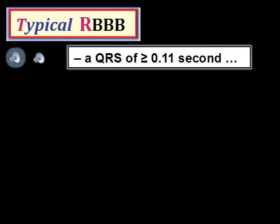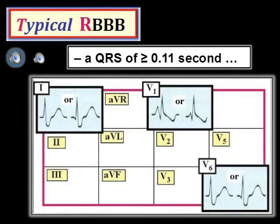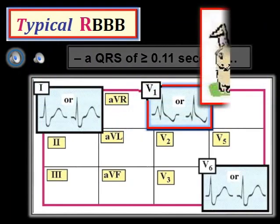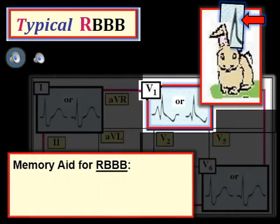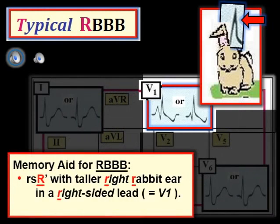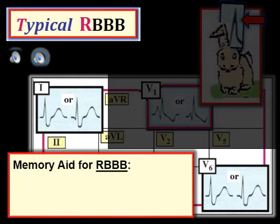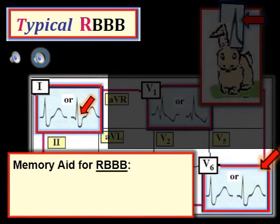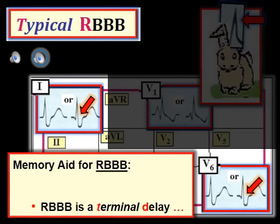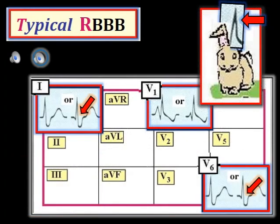What do we see with typical right bundle branch block? First, the QRS must be wide enough — at least 0.11 second in duration. The most characteristic finding is an RSR prime with taller right rabbit ear in lead V1. As a memory aid, think of the R's for right bundle branch block: we see an RSR prime with taller right rabbit ear in a right-sided lead, which is lead V1. In left-sided leads 1 and V6, we should see a wide terminal S wave. The S wave is wide because conduction through the blocked right ventricle is slow. Right bundle branch block is a terminal delay, with the last part of ventricular activity moving away from the left ventricle to produce this negative S wave deflection in leads 1 and V6.